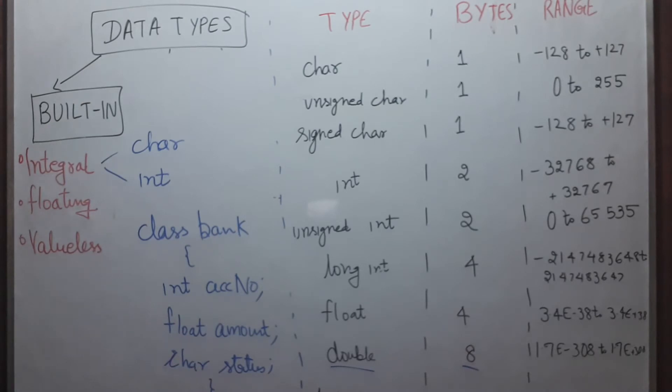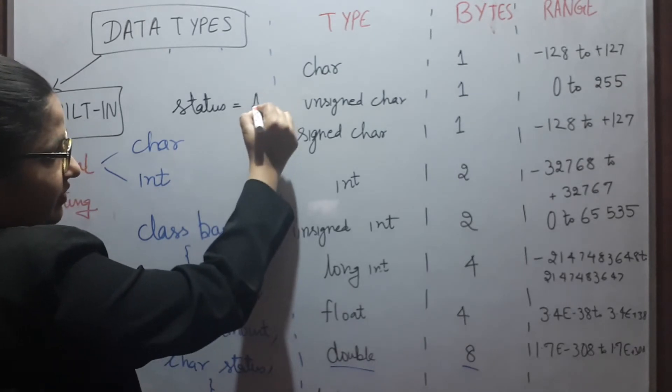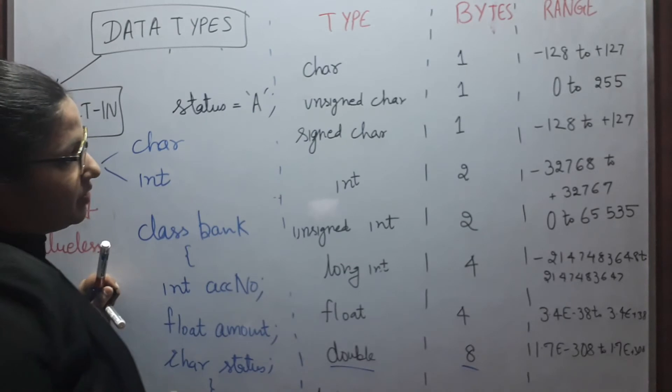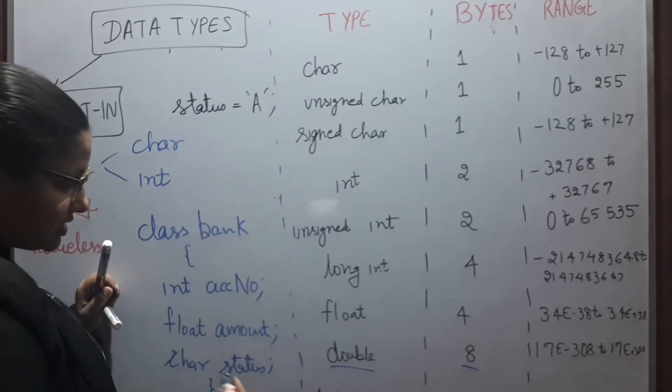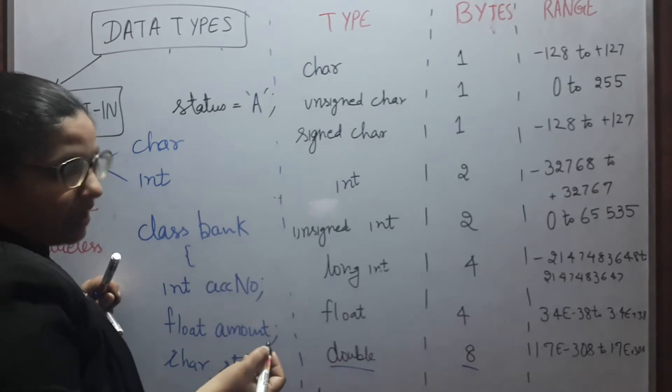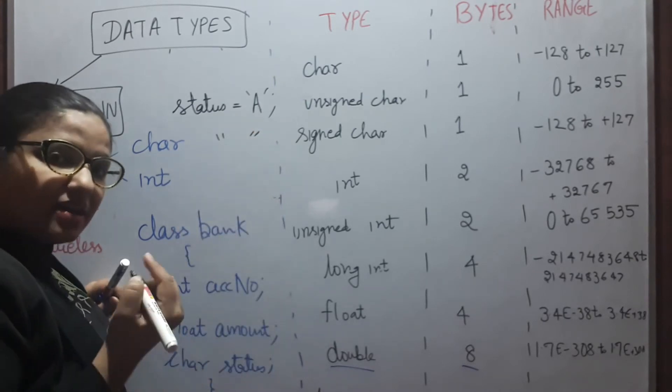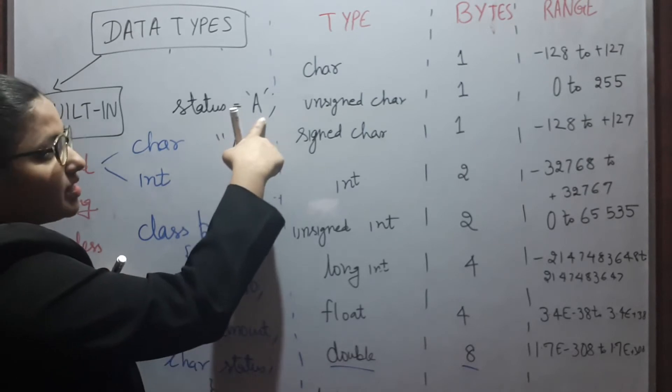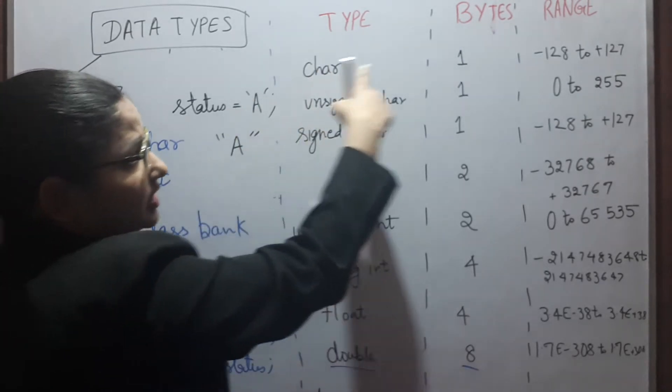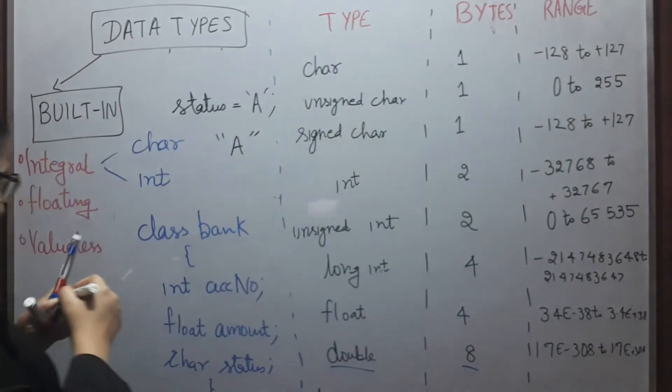As we know, status of any bank account can be active or dormant. So we can write statement as status equals to active 'A' in single quote. Now, this char status variable is storing single character that is 'A'. If you are having single quotes, then it's a character. If you are having double quotes, then it's a string. Character takes one byte of memory and its range is minus 128 to plus 127.